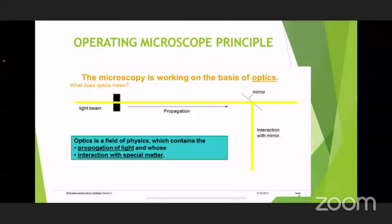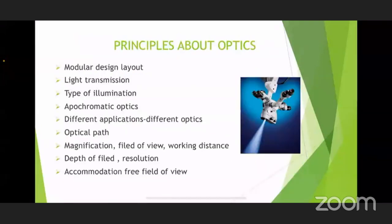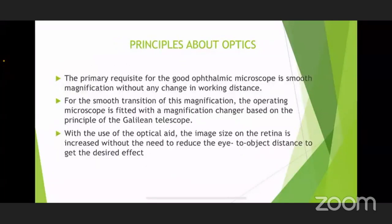The principle of an operative microscope is based on optics. There are various terms used in these optics which we will go through as we discuss the various parts of the microscope. The basic thing to remember is that the purpose of a good operating microscope is smooth magnification without any change in working distance. For this smooth transition of magnification, either we can have a knob giving stepwise magnification, or a zoom system with foot pedal control. The purpose is that, without changing the eye-object distance, we achieve a good image size on the retina for whatever surgery we are doing.